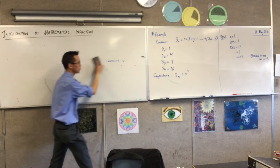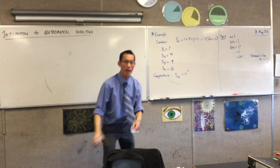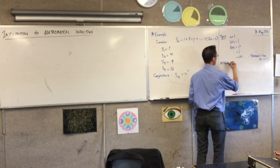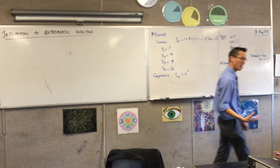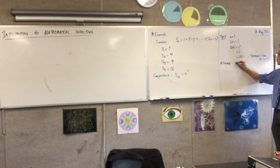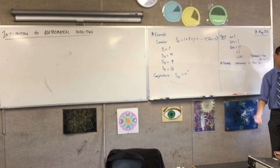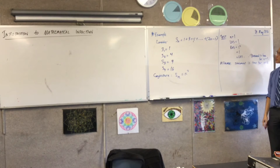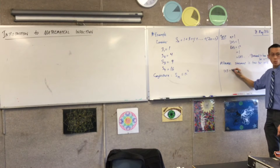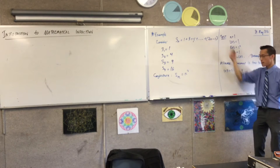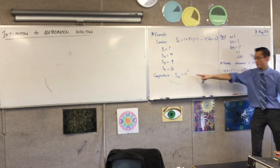Secondly, I'm going to bring some logic into play, and this bit is a little weird. I'm going to assume that my statement is actually true for some particular arbitrary value. Most people choose k. So I assume the statement is true for n equals k. The left-hand side would be one plus three plus five, all the way up to two k minus one — that's the kth odd number. The right-hand side would be k squared.